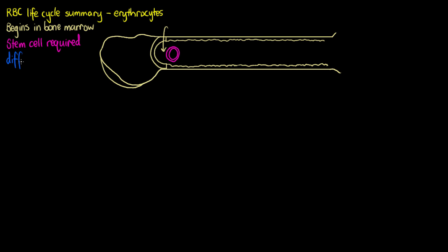So our multi-potent stem cells within the bone marrow will differentiate into pro-erythroblasts. And pro-erythroblasts are the first cell type dedicated to becoming a mature red blood cell after they have fully developed. So we have our pro-erythroblast here.